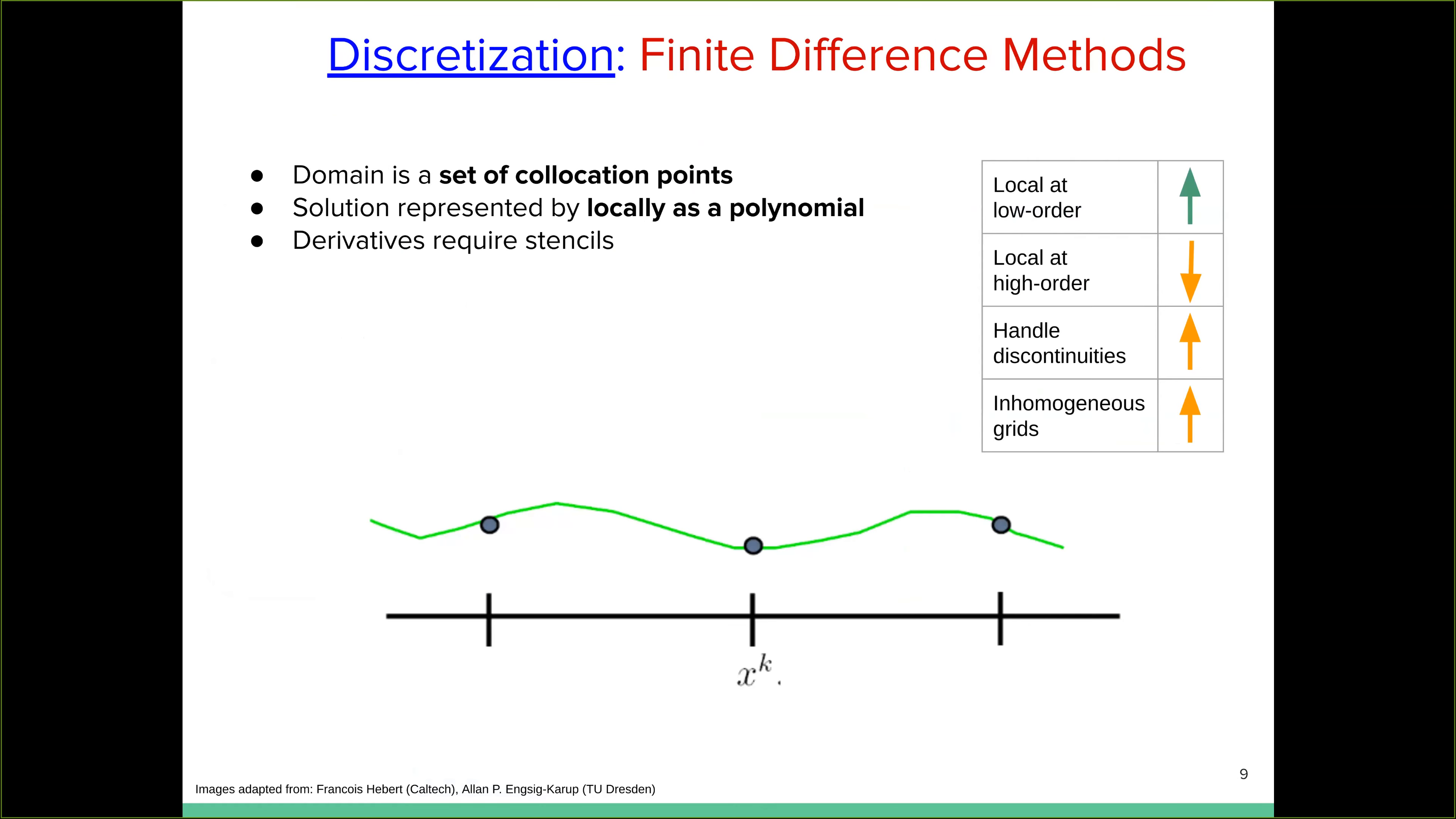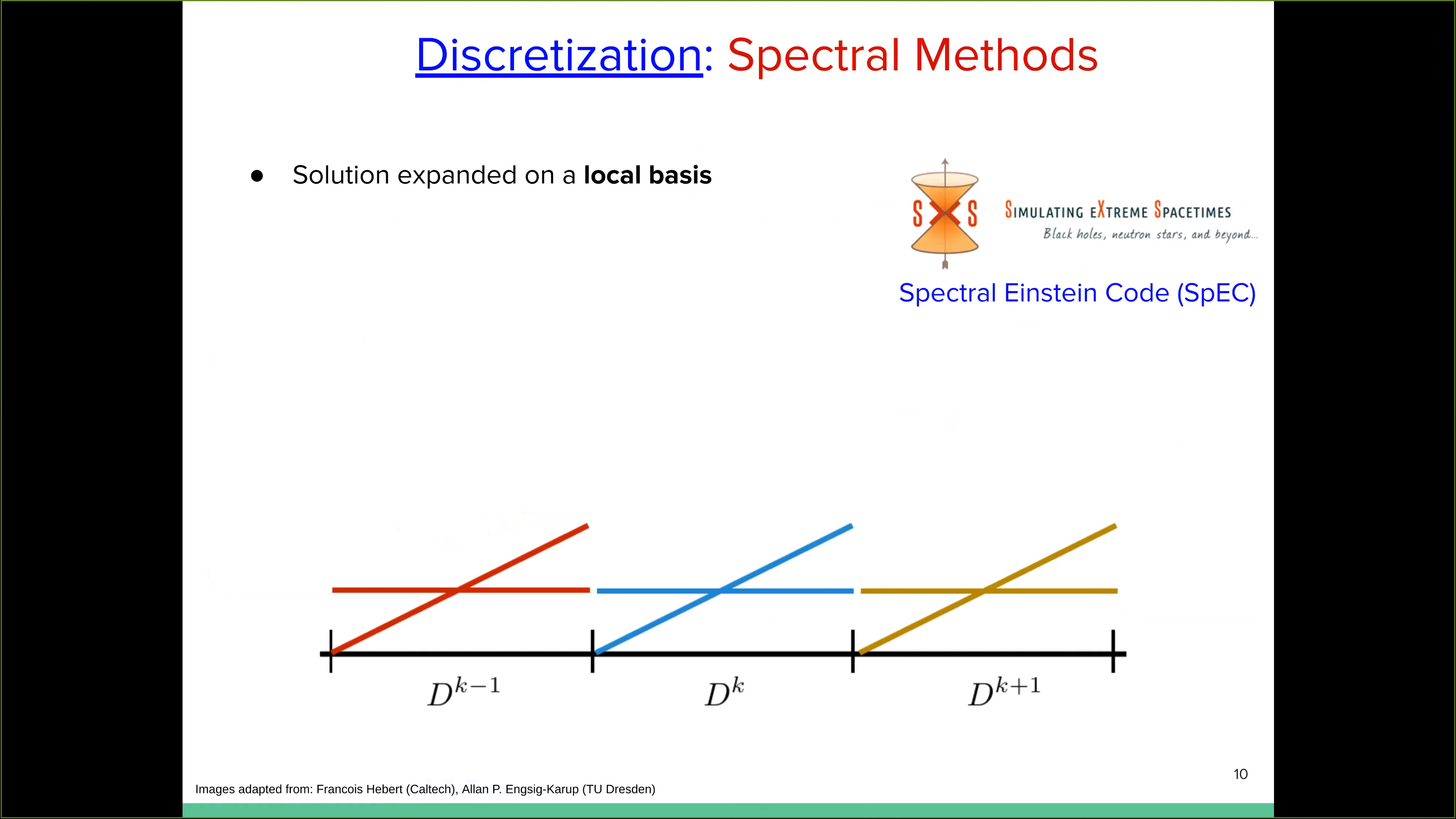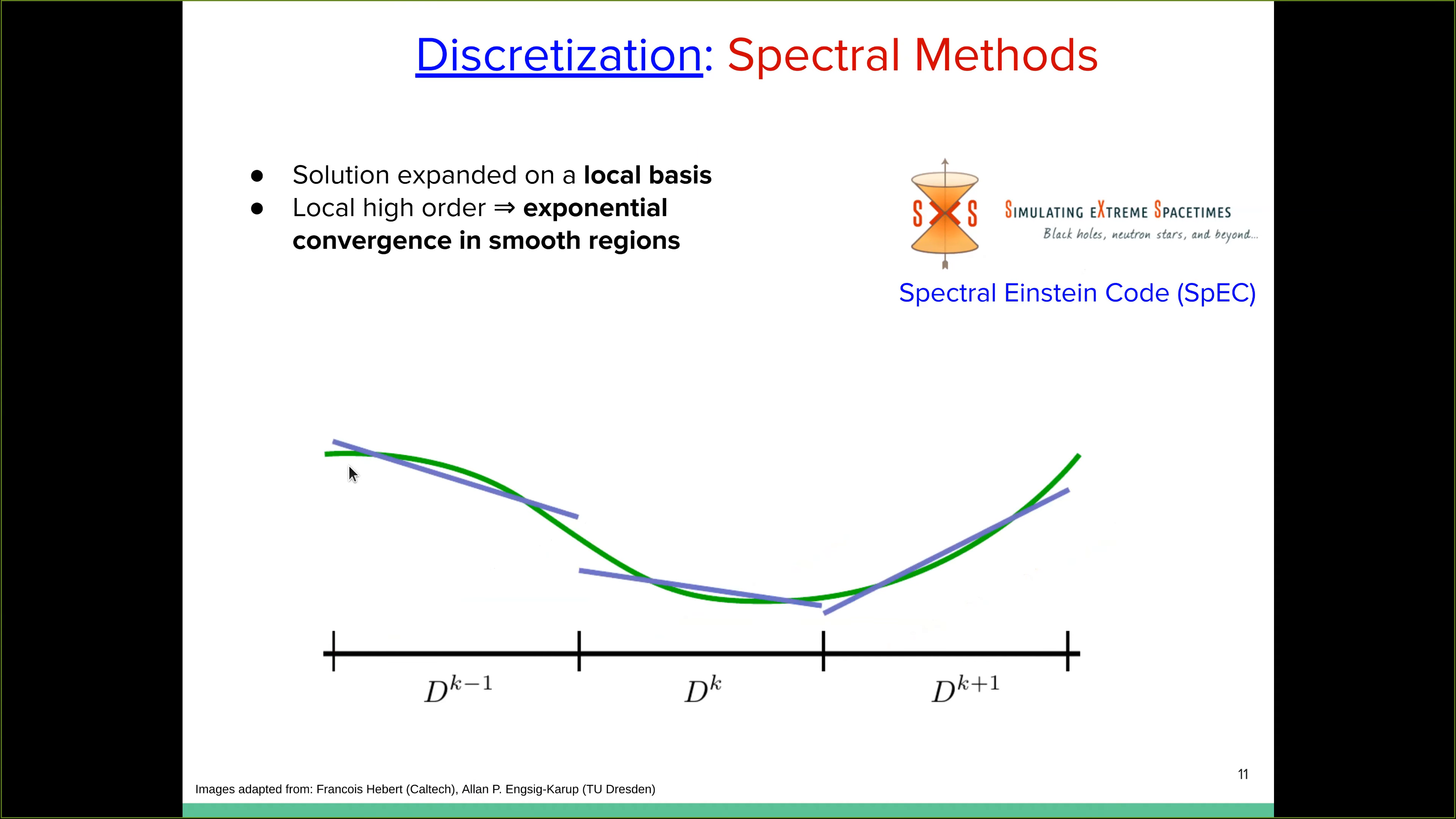Right. So the next popular method in the field is to use spectral methods. Now in spectral method solution is expanded on a local basis. Now the domain is no longer a set of points. Domain is a set of connected non-overlapping intervals. And here I've represented, I'm showing the first and second basis functions, which in each of these elements. So of course that is the constant and a straight line function, right. And any given solution can be expressed as the sum of those two basis functions.